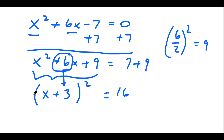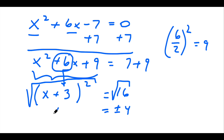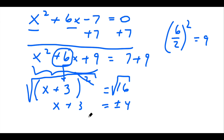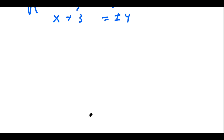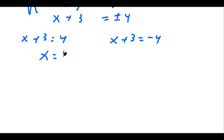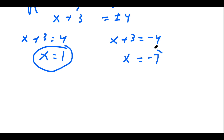So now we've completed the square. The next part to solve it would be to take the square root of both sides of the equation. And when you do that, you get two answers — you get plus or minus 4. This is going to just be x plus 3 because the square and the square root cancel. So now what you can do is split this into two equations. So I would write this as x plus 3 equals positive 4, and x plus 3 equals negative 4.